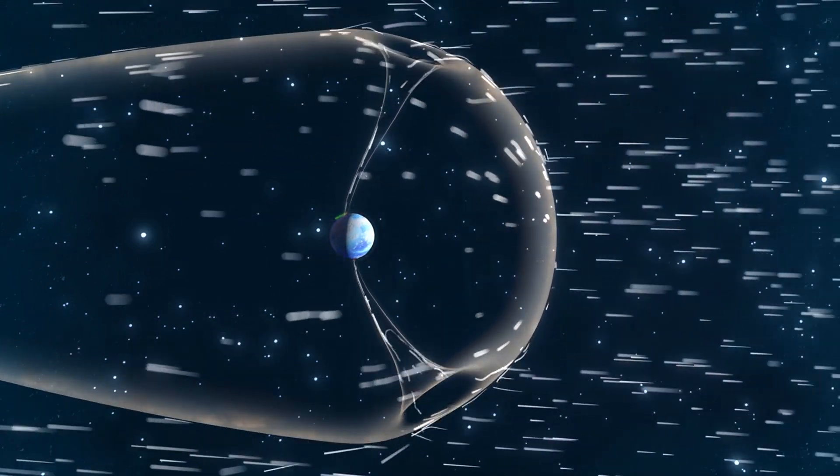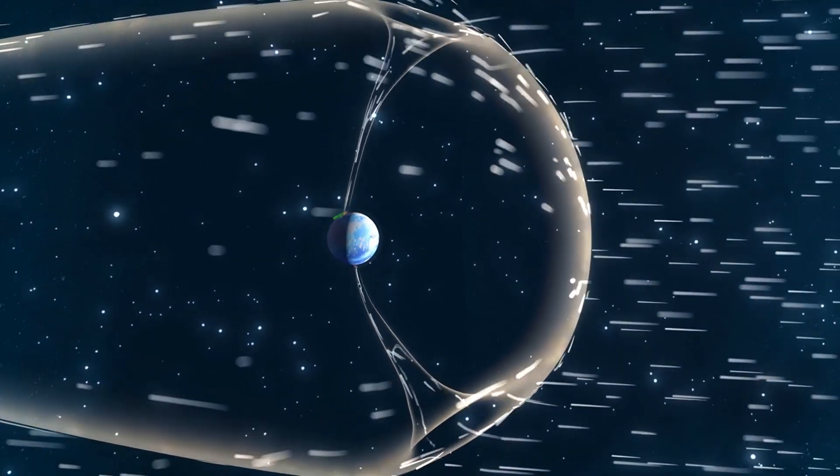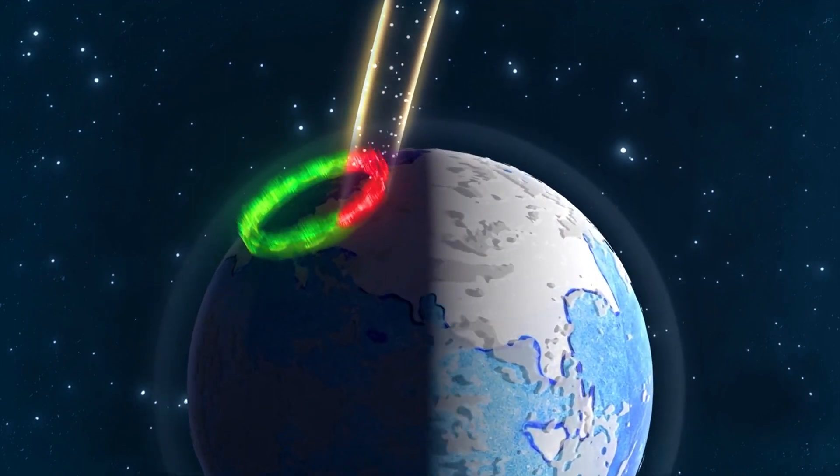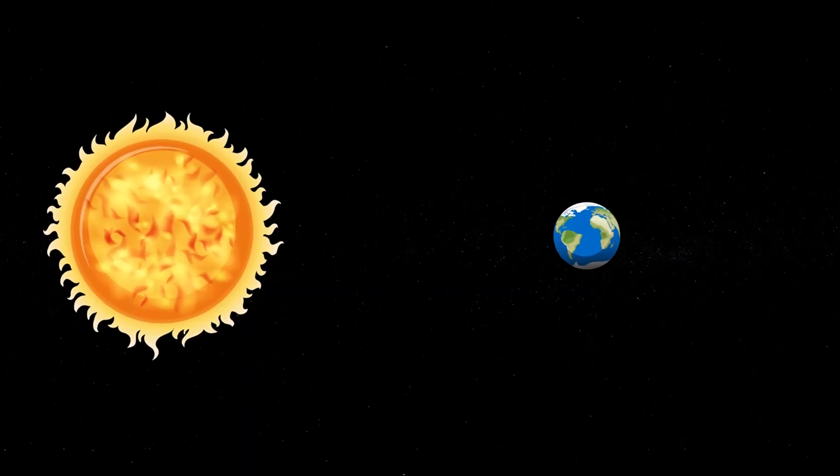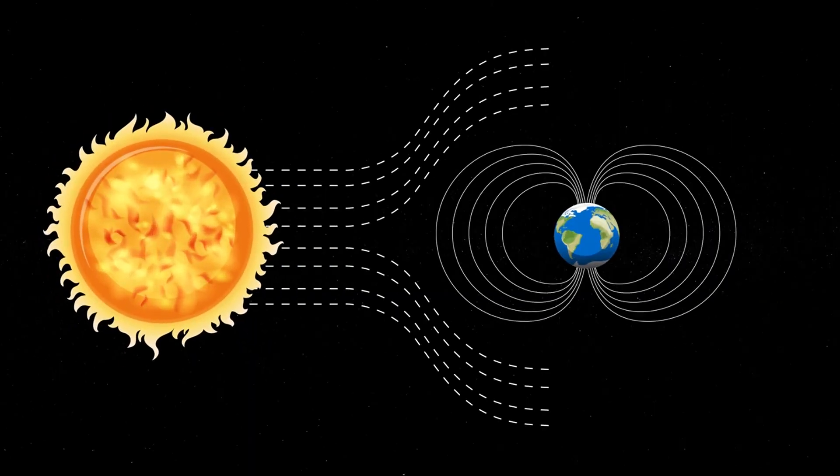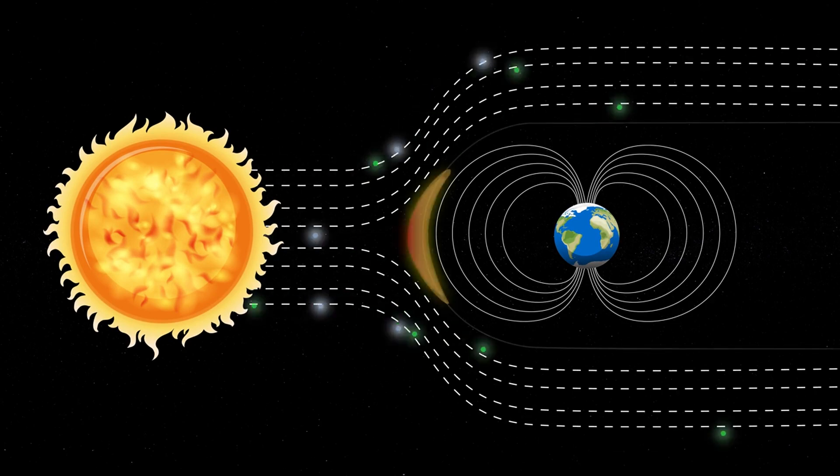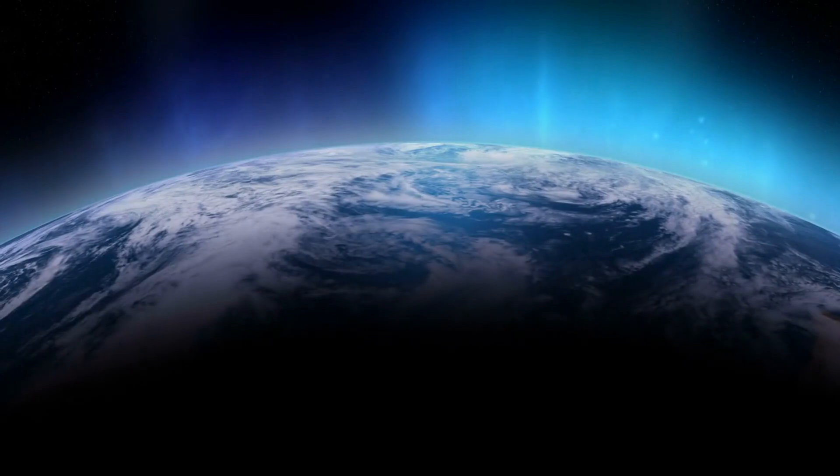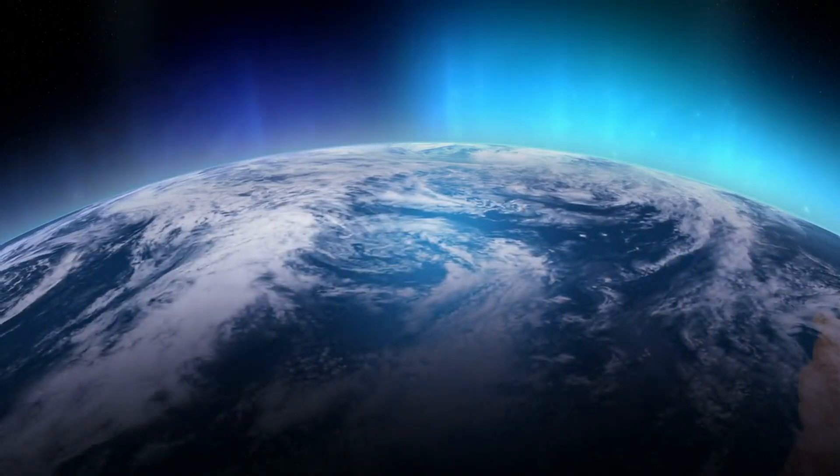Expect solar wind parameters to continue at or near background levels until late on October 1 to early on October 2. A positive polarity CHHSS is anticipated to become geo-effective during this time, leading to an increase in solar wind speeds. HSS conditions are expected to persist through October 3.